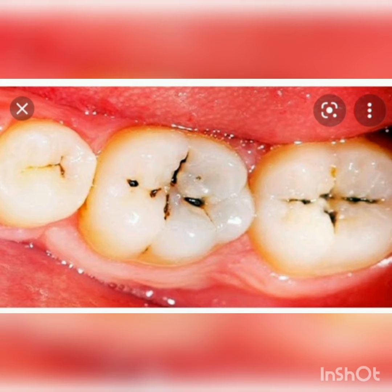What happens if our teeth become unhealthy? Whenever we eat anything — junk food, candy, or sugar — the food gets stuck between the teeth. Whatever food we eat, it gets stuck with our teeth. After eating, if we do not brush our teeth, this food remains stuck for a long time.